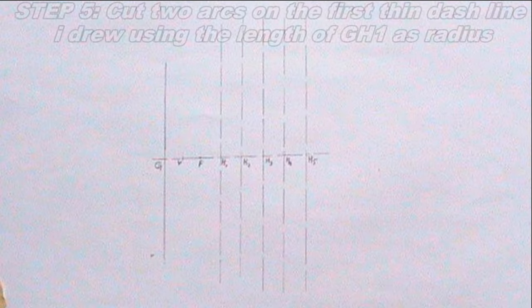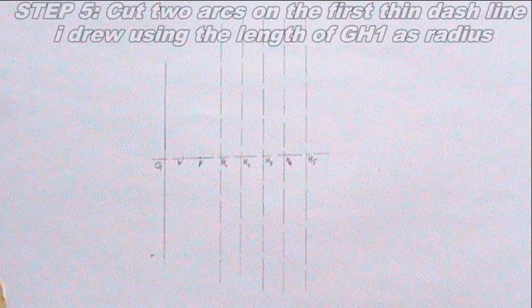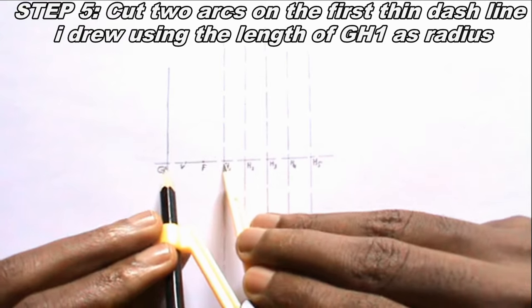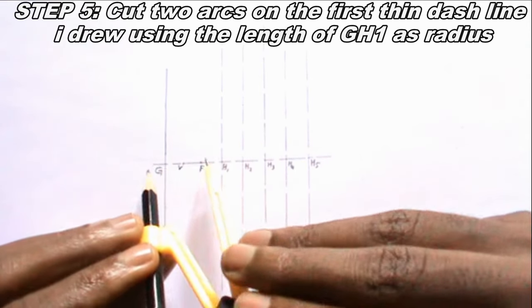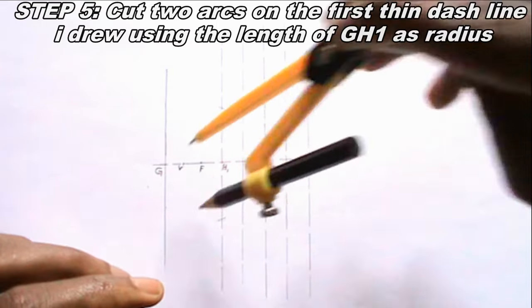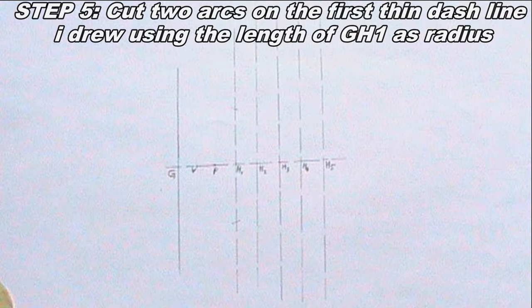Having done that, the next thing I will do is to cut two arcs on the first thin dash line I drew using the length of GH1 as radius. This step can be done this way. The point where the arc intersects the line should be labeled A1.